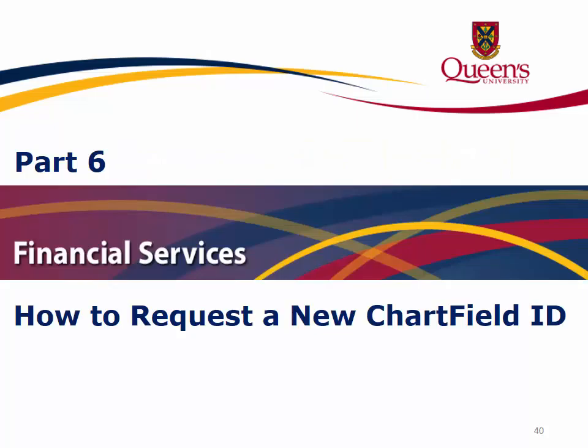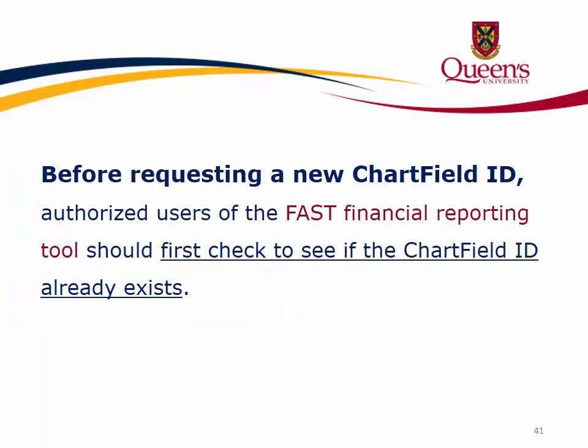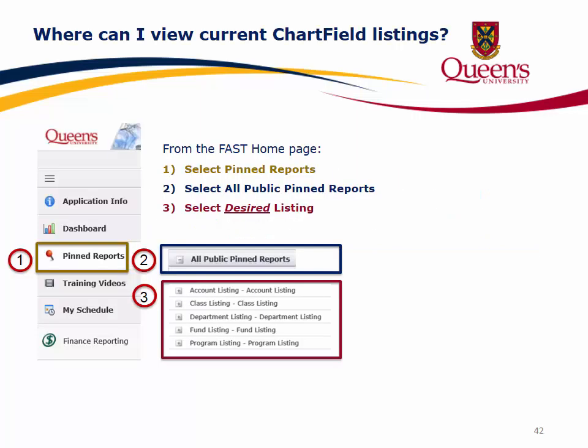Part 6: How to Request a New Chartfield ID. Before requesting a new chartfield ID, authorized users of the FAST Financial Reporting Tool should first check to see if the chartfield ID already exists. To view chartfield listings, begin on the FAST homepage, select Pinned Reports, select All Public Pinned Reports, and select the desired listing from the drop-down menu.